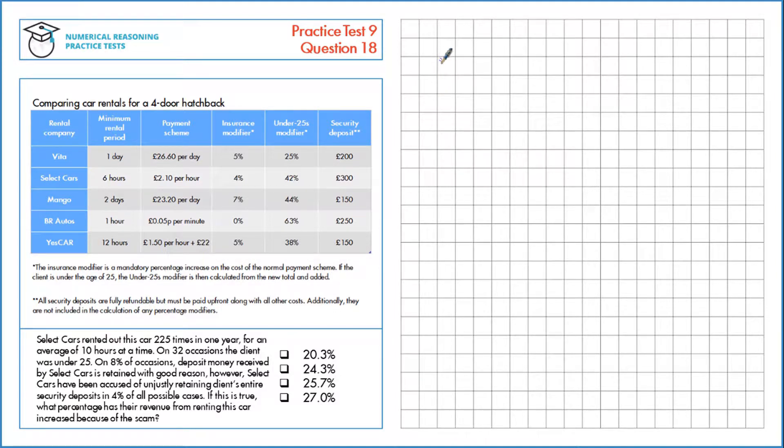Let's first figure out the revenue from the over 25s, since that's simpler straight away. If it's rented out for 10 hours at a time at £2.10 per hour, that's 2.10 times 10 hours, which is £21. Let's figure out what they get due to the insurance modifier. That's an increase of 4%, so 21 times 1.04, which is £21.84.